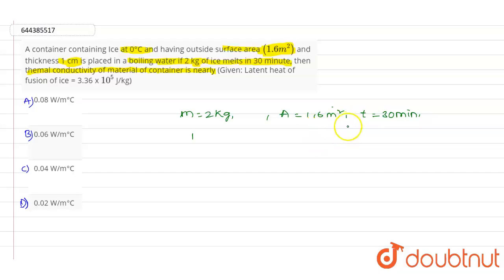And we have the thickness value which is dt equals 1 centimeter. Here we need to find out the value of k. K is nothing but the thermal conductivity value, and latent heat of fusion of the ice value is given as L equals 3.36 into 10 power 5 joules per kg.